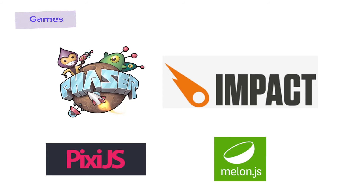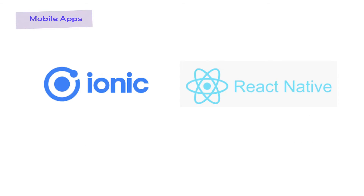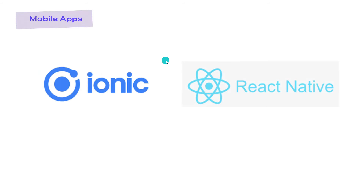For game development you can use Phaser, Impact, Pixi.js, Melon.js, and many other engines available for 2D and 3D. For desktop application development you can use Atom, Proton Native, NW.js, Meteor, and Node GUI — all good GUI development frameworks with JavaScript.